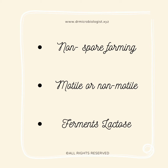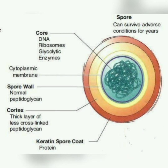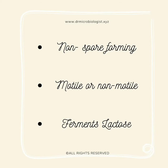Thirdly, they are non-spore forming. Spores are highly resistant dormant structures — that is, no metabolic activity — formed in response to adverse environmental conditions. Next, they may be motile or non-motile, meaning they may or may not move from one place to another.